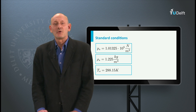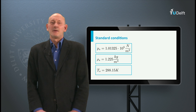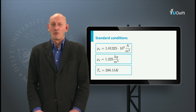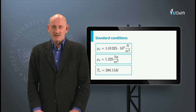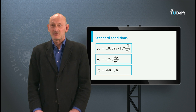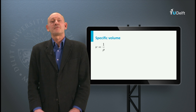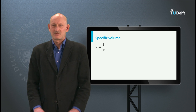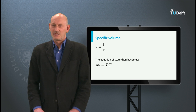The density is 1.225 kilograms per cubic meter and the temperature is 15 degrees Celsius or 288.15 Kelvin. To get an idea of the weight of the air, imagine you have a room that is 20 meters deep, 10 meters wide and 4 meters high. At standard conditions, the air in the room weighs almost 1000 kilograms. Instead of looking at the density, we can also consider the specific volume, defined as 1 divided by rho. V gives the volume of 1 kilogram of gas. The equation of state then reads: P times V is R times T.